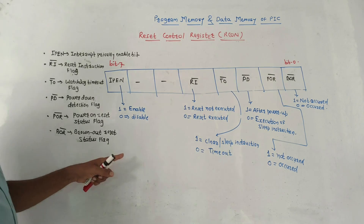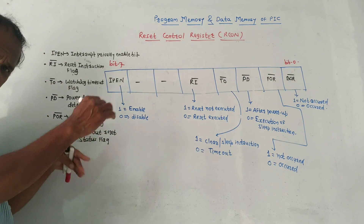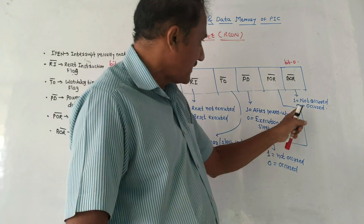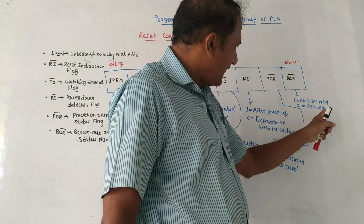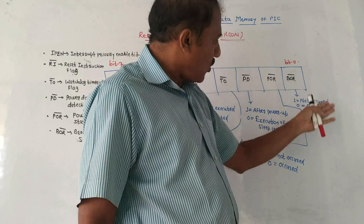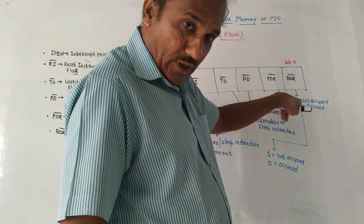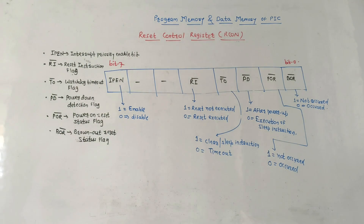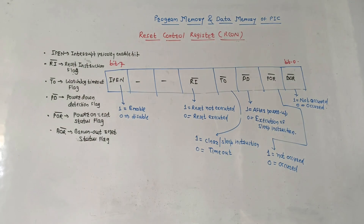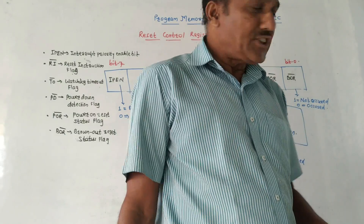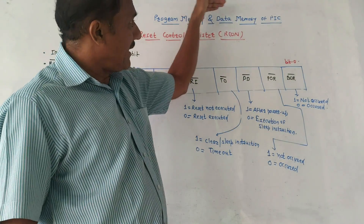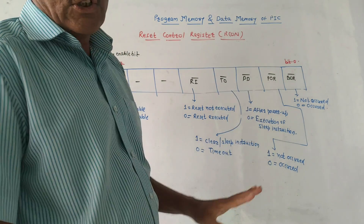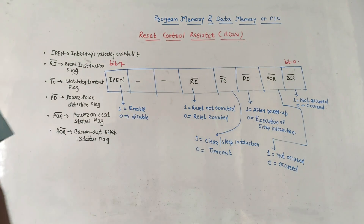The last bit — bit number zero — is BOR-bar, the Brownout Reset status flag. If this bit is one, it indicates that brownout reset has not occurred; if zero, it indicates that brownout reset has occurred. That covers the program and data memory organization of the PIC microcontroller. Thank you for watching this video.